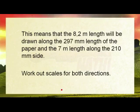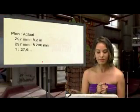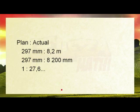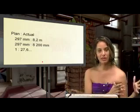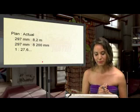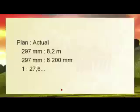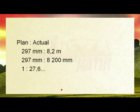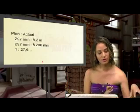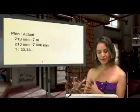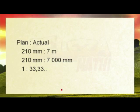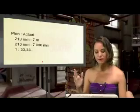Work out scales for both directions. For the length: 297 millimetres is the length of the A4 page, placed against the length of the house which is 8.2 metres — but we need to convert to millimetres, so 8.2 times 1000 gives us 8200 millimetres. Dividing 297 by 8200 gives us approximately 1 to 27.6 — so 1 on paper equals 27.6 in reality. For the width: 210 divided by 7000 millimetres gives us 1 to 33.3 — meaning 1 on paper equals 33.3 in reality.